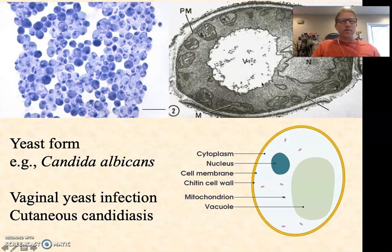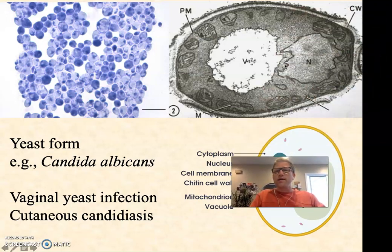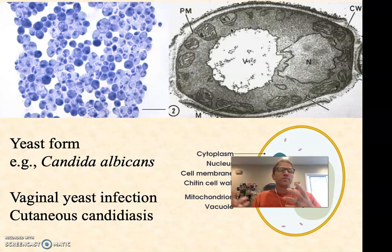Here we have a transmission electron micrograph where they've actually sliced through the cell. What we can see is cytoplasm surrounding a nucleus — it got a little squished in the process, but that's the nucleus. You can see many mitochondria all the way around. There's also an organelle called a vacuole. Yeasts have these large vacuoles where they store a lot of metabolites and nutrients they could need for future metabolism — for example, calcium, phosphate, and a bunch of amino acids.